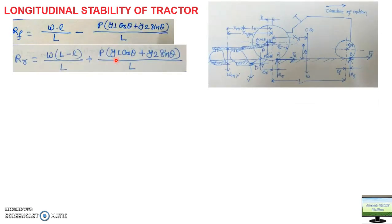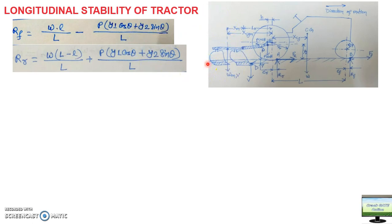From my weight distribution videos, you should be familiar with the photograph of tractor and implement combination and the two formulas I derived, with the assumption that Rr and Rf pass through the center of the rear axle. I have also already explained what happens when the pull component P increases.